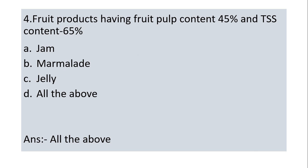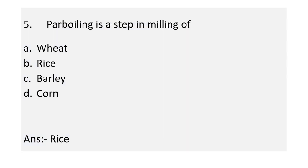Next question 4: Fruit products having fruit pulp content 45% and TSS content 65%. Options: A, jam; B, marmalade; C, jelly; D, all of the above. Answer is all of the above.